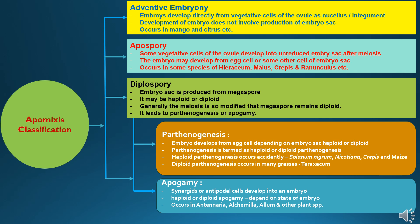Adventive embryony refers to the development of an embryo directly from vegetative cells of the ovule, where the development of the embryo doesn't involve production of an embryo sac, and it occurs in mango and citrus crops.